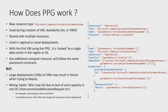You create this proximity placement group object and then use it when you create your availability set, VM, or scale set. So right under properties in an ARM template there's a proximity placement group parameter, and that's where you assign the resource — either provisioned before this ARM template or as part of it — to specify where you want all the resources placed.